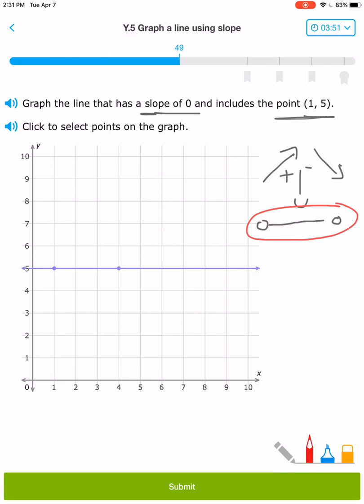A slope of 0 means that it's going to be a flat horizontal line. So my next point can be anywhere on the same horizontal line as my first point. And so there is my line.